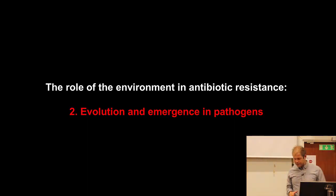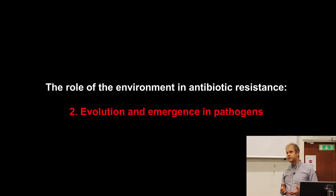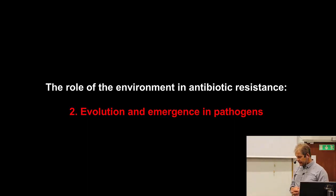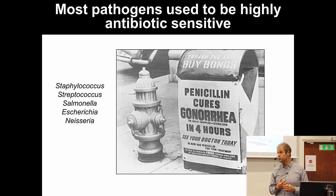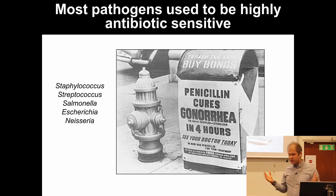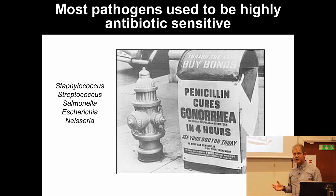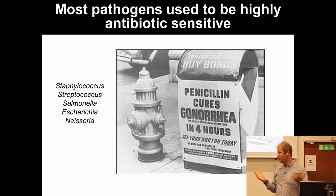Let's talk about the role of environment, the evolution of antibiotic resistance, and the emergence of resistance in pathogens. If we step back in time to when we started to use mass-produced antibiotics in the 1940s, most pathogens used to be highly sensitive to antibiotics. When antibiotics came, they were revolutionary — thought to basically cure all bacterial infections.